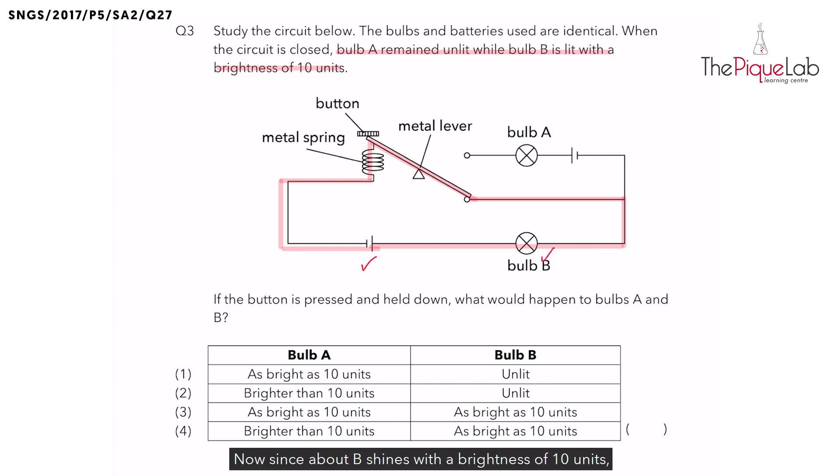Now, since bulb B shines with a brightness of 10 units, we know that the 10 units of electricity is supplied by one battery. Let's write that down.